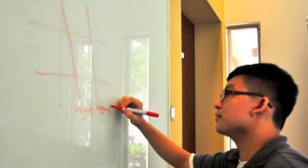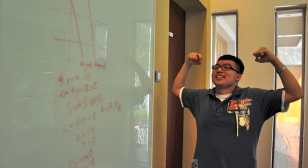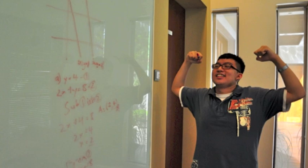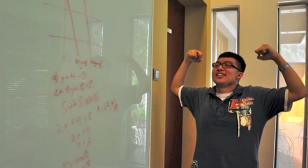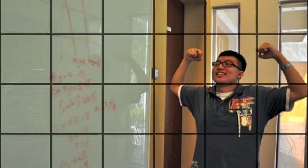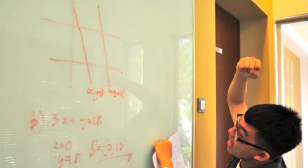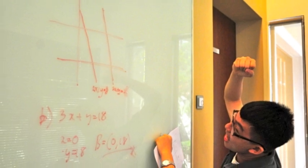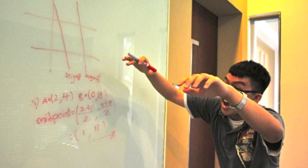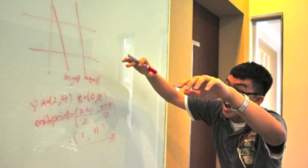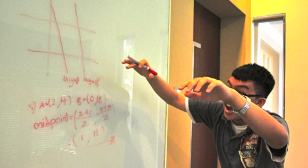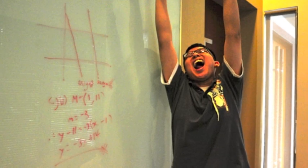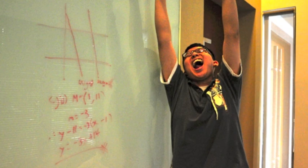Now that I've taught you everything, I'll be going. Find the coordinates of midpoint M of the line joining A to B. Find the equation of the line through M parallel to 3x plus y equals 18.